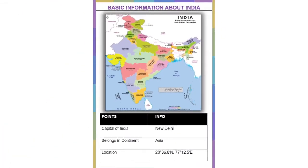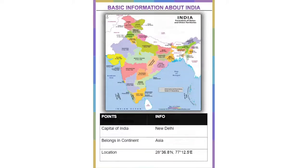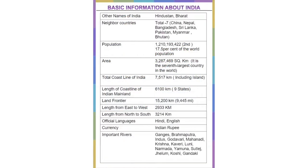You can see the map of India along with its states and union territories. The capital of India is New Delhi. It belongs to the continent Asia. The location of India is 28 degrees 36.8 north, 77 degrees 12.5 east. Other names of India are Hindustan and Bharat.